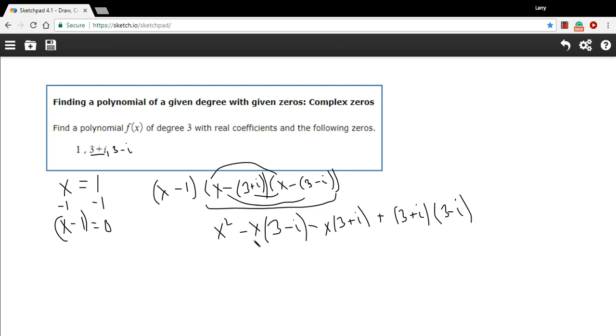All right, now let's go ahead and multiply through these x's and foil out this bit. So we're going to have x squared, and multiplying through this x, I've got a negative three x and then a positive x i. And here we'd get a negative three x and a negative x i. And here, first terms we'd get a nine. Outside terms we'd get a minus three i. Inside terms we'd get plus three i. And last terms we'd get a negative i squared.